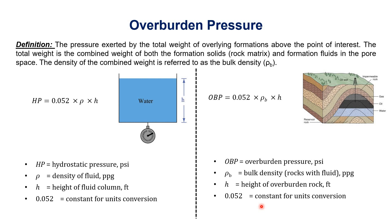Now let's see the formula for how to calculate overburden pressure. We know that the formula for hydrostatic pressure is 0.052 × density × height. Similarly, overburden pressure uses the same formula, but the density parameter changes. For hydrostatic pressure we use the density of the fluid; for overburden pressure we use the density of both the rock and the fluid in it — we call this bulk density.